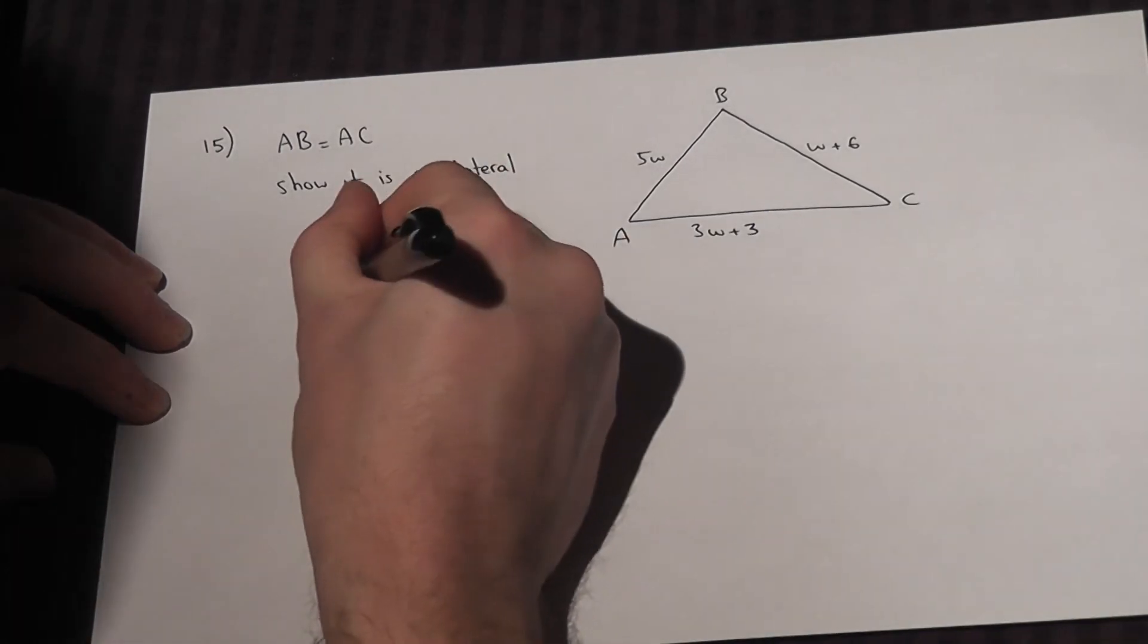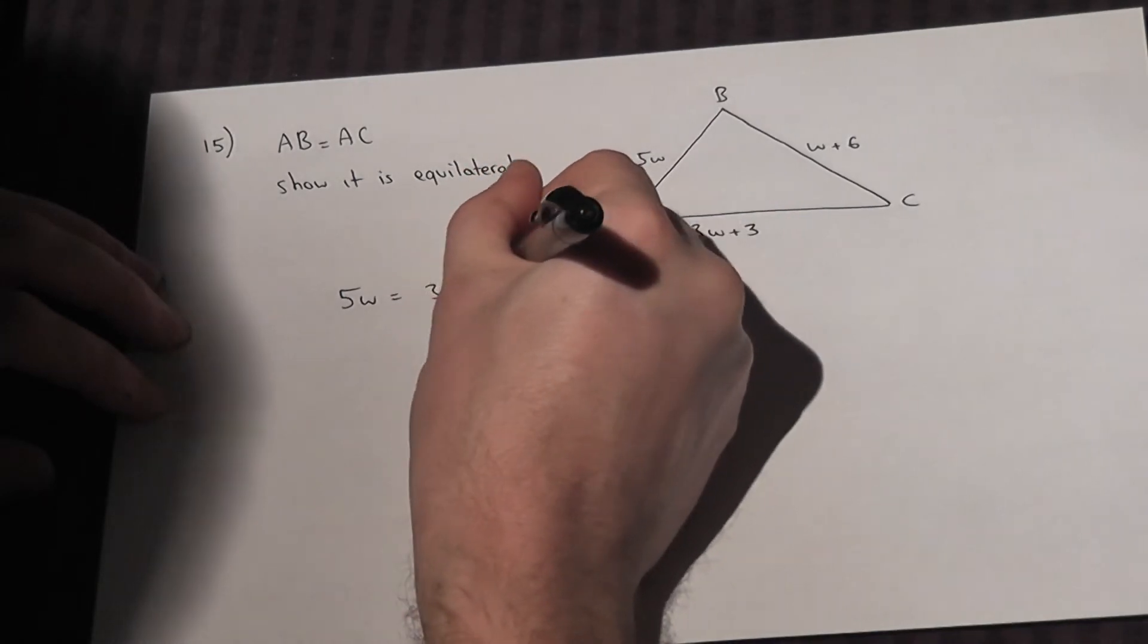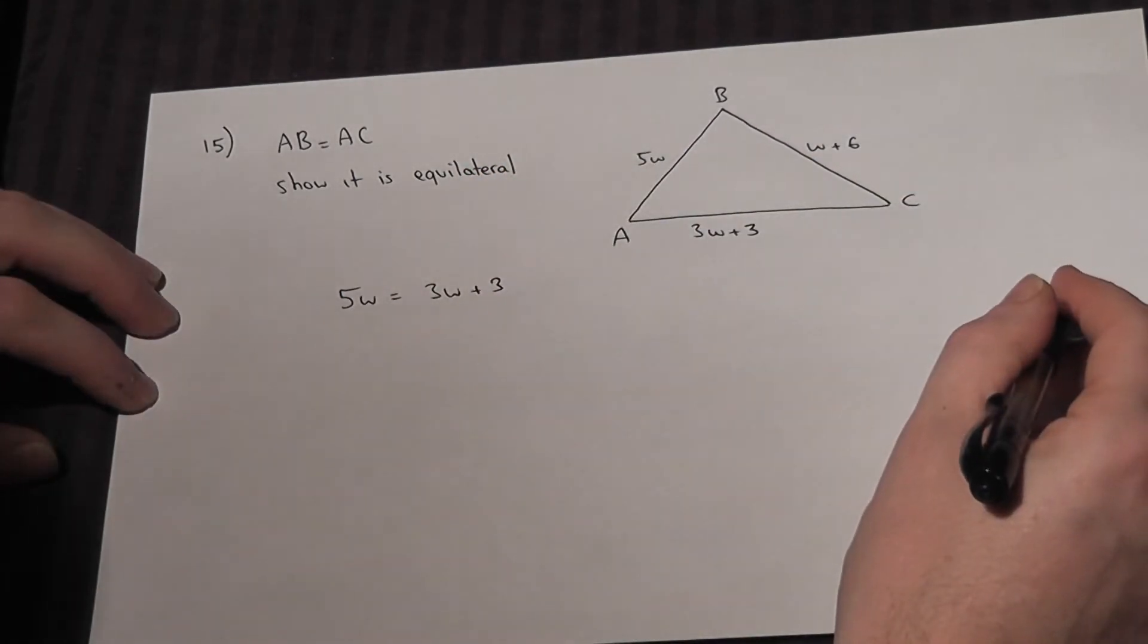So 5W, which is AB, must equal 3W plus 3. We can then solve for W.